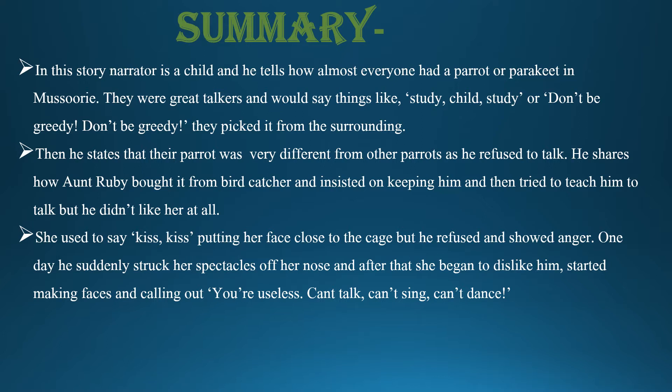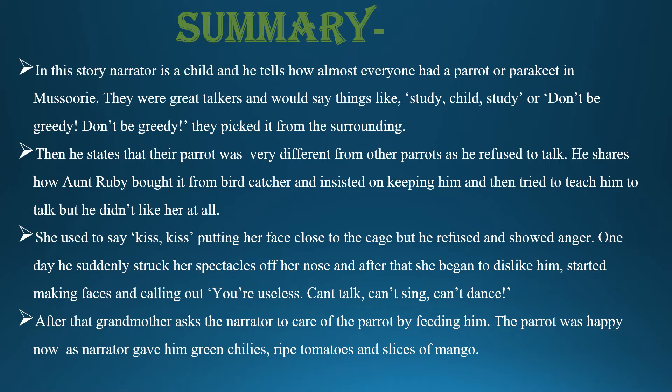She used to say 'kiss kiss' while putting her face close to the cage, but he refused and showed anger. One day he suddenly struck her spectacles off her nose and after that she began to dislike him. She started making faces and calling out, 'You are useless, can't talk, can't sing, can't dance.' After that, grandmother asks the narrator to take care of the parrot by feeding him. The parrot was happy as the narrator gave him green chillies, ripe tomatoes and slices of mango.